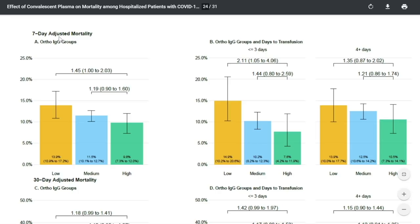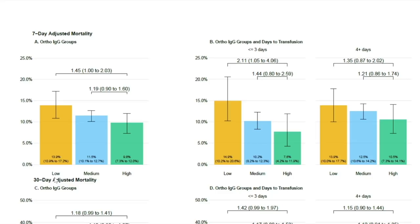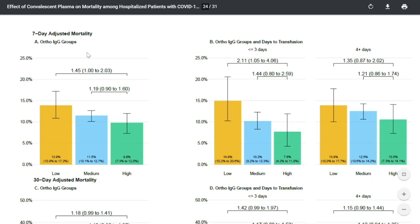Let's actually get to the data. When we look at seven-day adjusted mortality on the y-axis, we see three different groups: low in yellow, medium in blue, and high in green, referring to the amount of antibodies in the convalescent plasma. In those with low amounts of antibodies, mortality was highest. In those with highest amounts of antibodies, this was among the lowest mortality. The 95% confidence intervals just get to the border of significance at 1.00 to 2.03. This difference was not statistically significant for all comers.